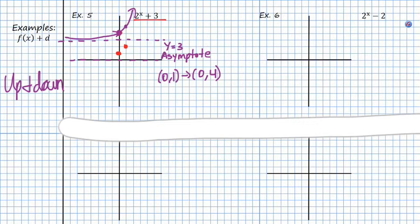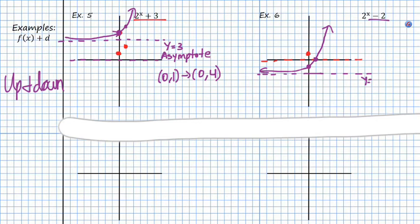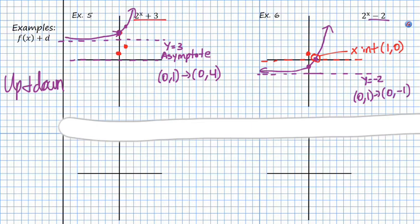A negative shift will do the same thing except we're going down. We start at (0, 1) with our asymptote, and we shift down 2 because it's minus 2. So we shift our point down 2 and our asymptote down 2, and all other points follow. Now my asymptote is y = negative 2, and my starting value went from (0, 1) to (0, negative 1). An interesting thing has occurred — we now have an x-intercept at (1, 0), so we've created a little bit more information.